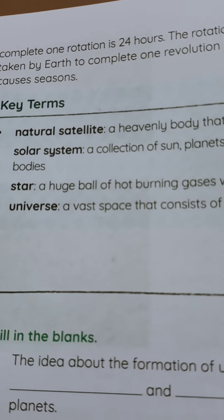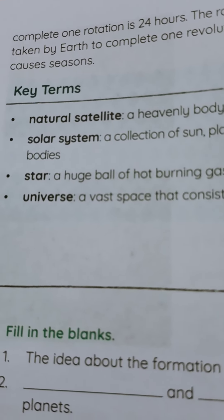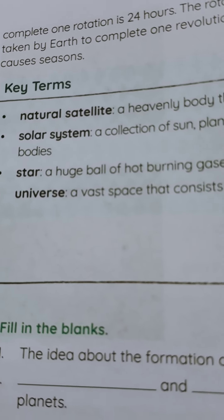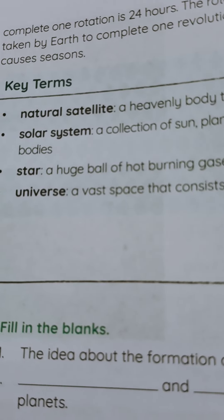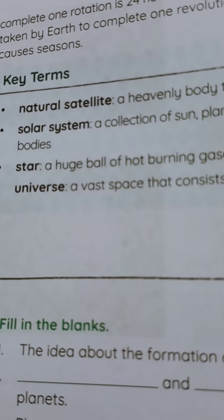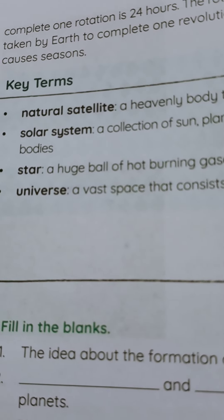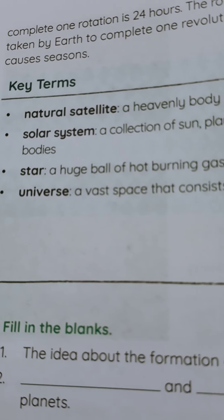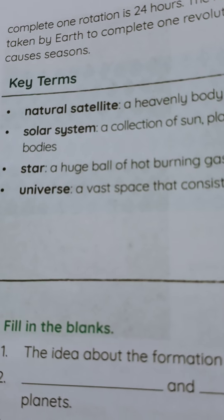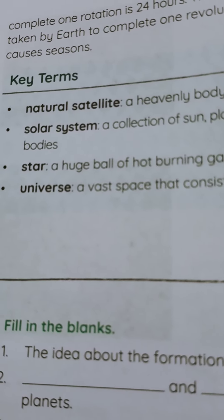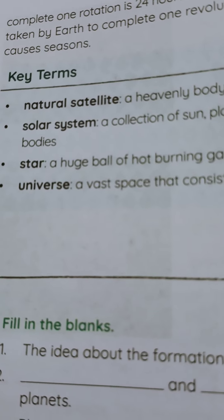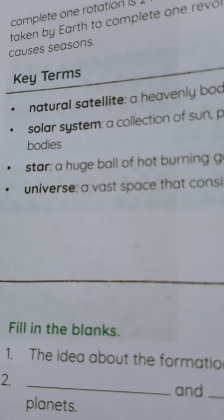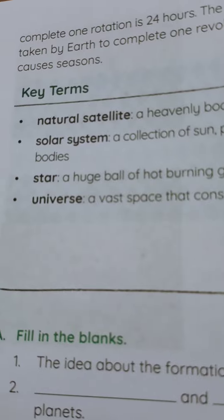The revolution of Earth takes 365 and one-quarter days. The revolution of Earth causes seasons. Rotation takes 24 hours and causes day and night; revolution takes 365 and one-quarter days and causes seasons. So I want you to read about the surface of the Earth and about rotation and revolution, and understand it. Thank you.